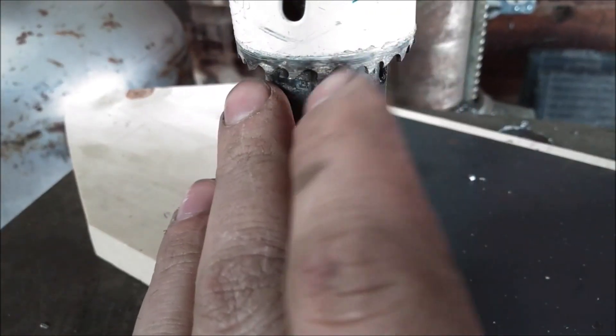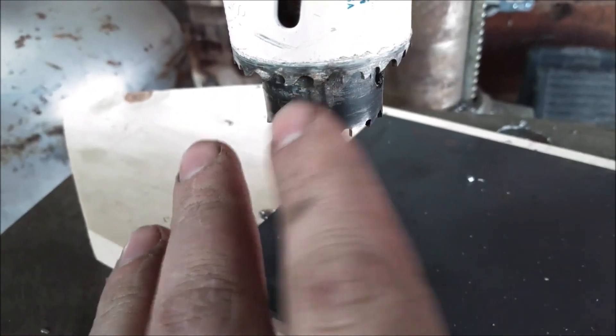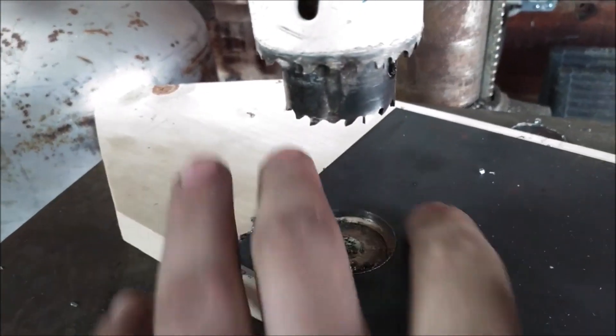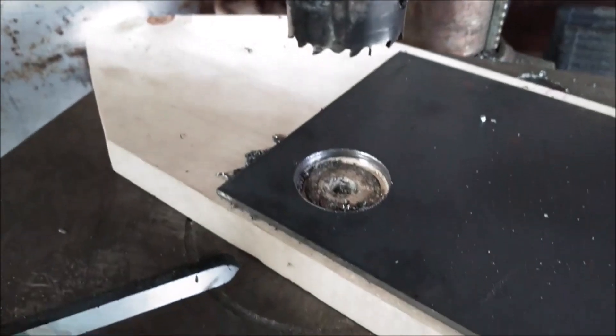Or in my case, I'm actually trying to create a ring. So this inch and a quarter and inch and three-quarter hole saw will leave me a little ring that I'm going to use on a motorcycle exhaust pipe.